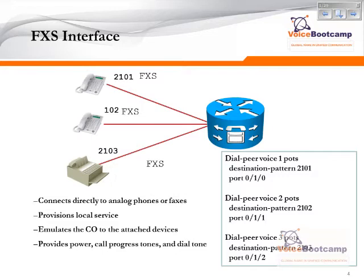In this case, the Cisco router provides local services such as assigning an extension to the phone, providing dial tone, and providing call progress tones such as ringing and ring back. It basically acts as a service central office.